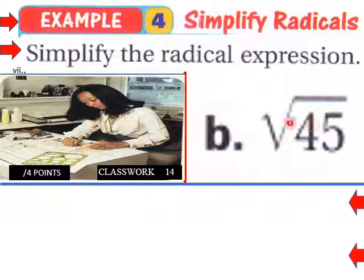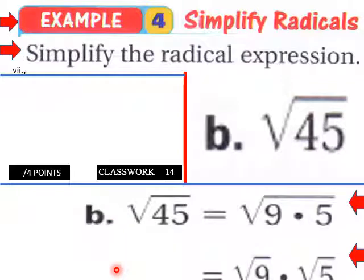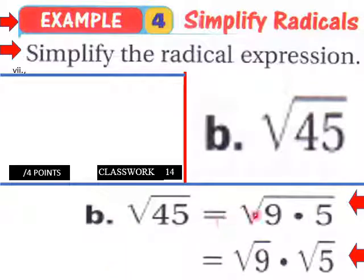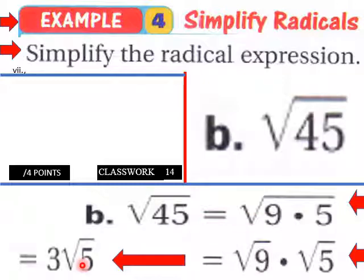Part B: Is there a perfect square that's a factor of 45? Radical 9 times radical 5, which is 3 times radical 5. That's how you would factor these out. You simplify these radical expressions by factoring out a perfect square.